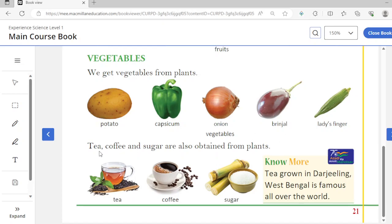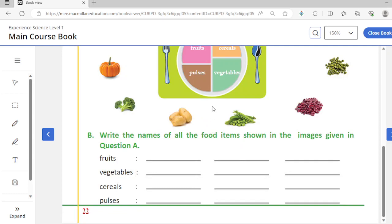Besides these, tea, coffee and sugar are also obtained from plants. From sugar cane, which is ganna, we get sugar. From coffee seeds we get coffee powder. And here is tea. One more thing - Darjeeling in West Bengal is a place famous for tea cultivation, known throughout the world.